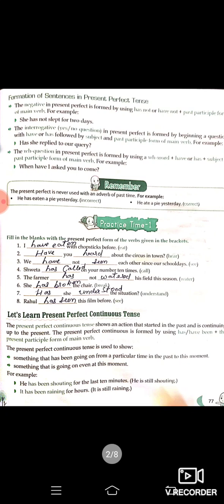Formation of sentences in present perfect tense. The negative in present perfect is formed by using 'has not' or 'have not'. Negative banana hai agar hamen present perfect tense ke andar to hum has not ya have not ka use karenge. Example: 'She has not slept for two days' — woh do din se so hi nahi hai.